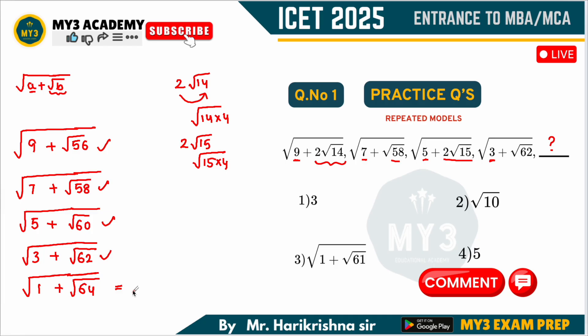The next term should be root over 64. So this value will be root 1 plus root 64, and root 64 is 8. So 1 plus 8 means it is going to be root 9, which is nothing but 3. So the answer must be option 1 — mark the answer choice as 3.